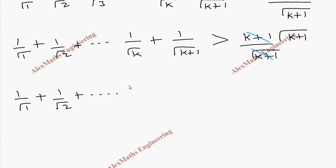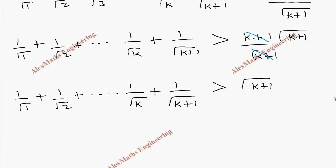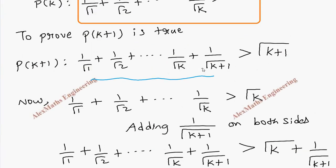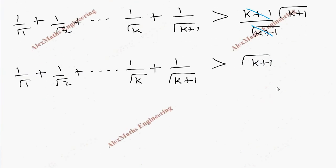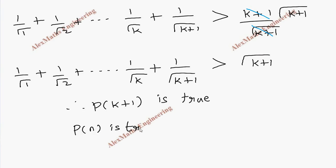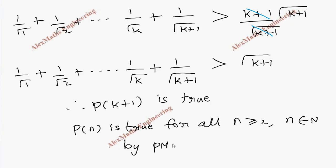So we have proved that 1/√1 + 1/√2 + ... + 1/√k + 1/√(k+1) > √(k+1), which is exactly the P(k+1) expression. Therefore P(k+1) is true, and hence P(n) is true for all n ≥ 2 and n belonging to the natural numbers, by the principle of mathematical induction.